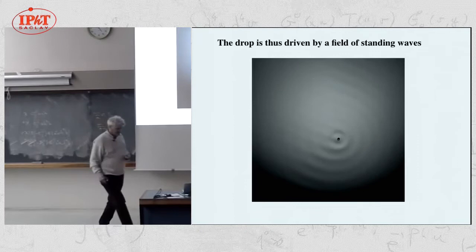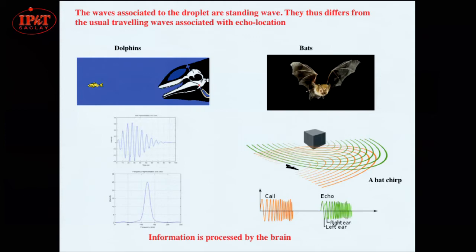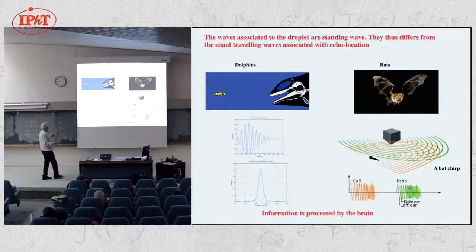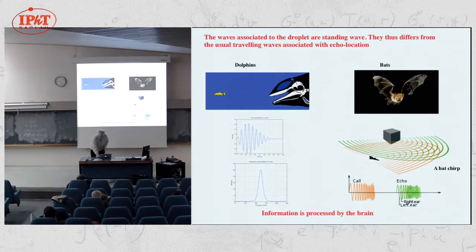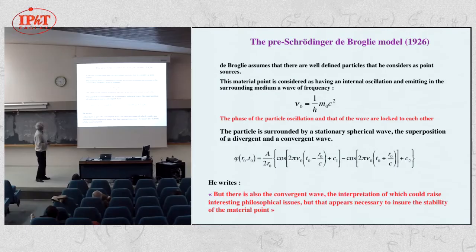The wave field of the drop is a field of standing waves — the drop propagates, propelled by standing waves. This is actually very important: you have a system where the drop is piloted by standing waves. This is a very sharp contrast with classical pilot waves, which are usually traveling waves, like how bats or dolphins send chirps and listen to the echo. Here we have a standing wave, strangely reminiscent of the earliest model of de Broglie.